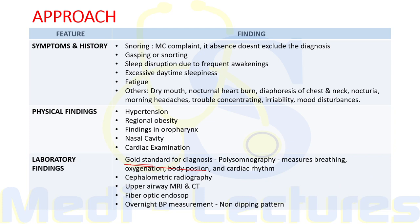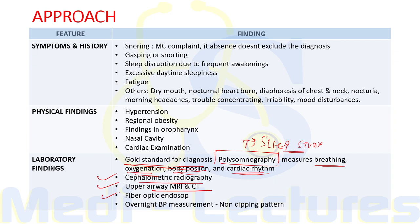The gold standard investigation for diagnosis is polysomnography, also known as sleep study. It measures breathing, oxygenation, body position, and cardiac rhythm during sleep. Investigations like cephalometric radiography, upper airway MRI and CT scan, and fiber-optic endoscopy can identify anatomic risk factors. On overnight BP measurement, a non-dipping pattern is seen in OSA patients — normally there is a 10 percent fall of BP during sleep, which is absent in these patients.